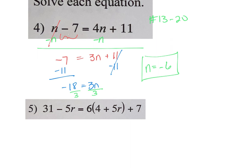You can check these by plugging them in. The next kind includes distribution. When you have parentheses, you have to distribute first to get out of those parentheses. I'm going to distribute my 6 first here. On the left-hand side, nothing happens. 6 times 4 and 6 times 5r. On the right-hand side, I want to combine my like terms. I have a 24 and a 7.